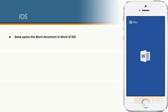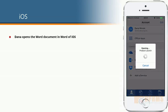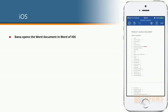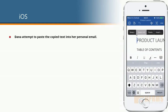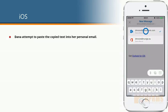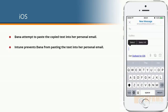Next, she will open the document in Microsoft Word. As we can see, there are no issues opening the document, as Word is being managed and permitted by Intune. She will now copy some of the text and paste it over to her personal non-corporate email — and as we can see, Intune prevents her from doing that.